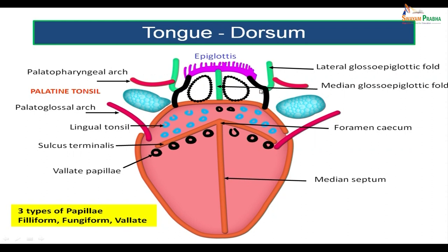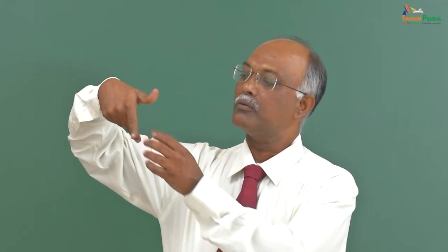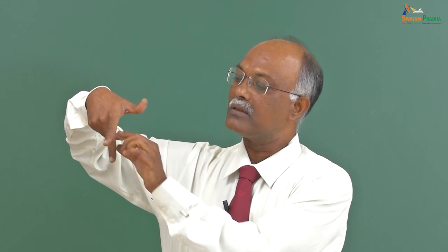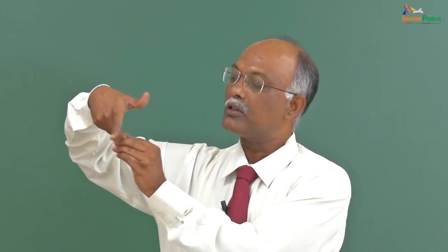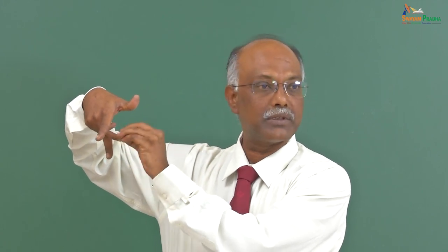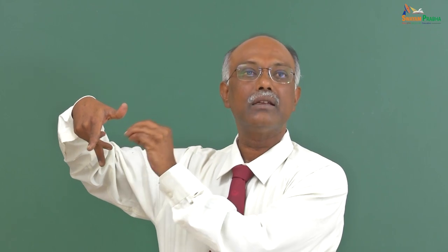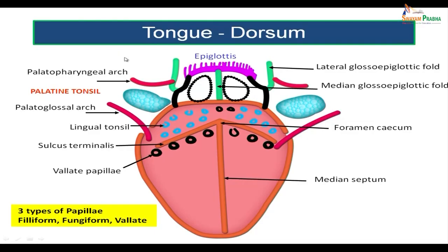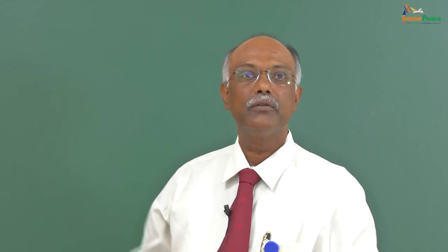Now look at the posterior surface. There are two folds: one extending from the pharynx to the palate, called the palatopharyngeal fold, and one extending from the tongue to the palate, called the palatoglossal fold. In between the palatoglossal and the palatopharyngeal fold, that is where the palatine tonsils are located. The palatine tonsil is located in the V formed by the palatoglossal and the palatopharyngeal folds.